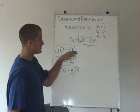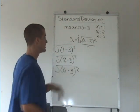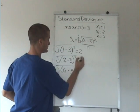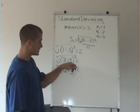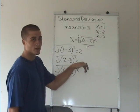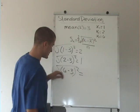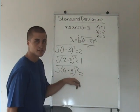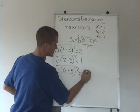So, 1 minus 3 is negative 2, squared is 4, and the square root of that is 2. 2 minus 3 is negative 1, squared is 1, the square root of that is 1. And 6 minus 3 is 3, squared is 9, the square root of that is 3.